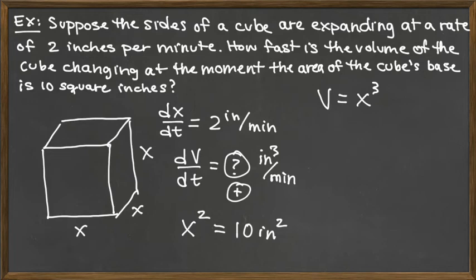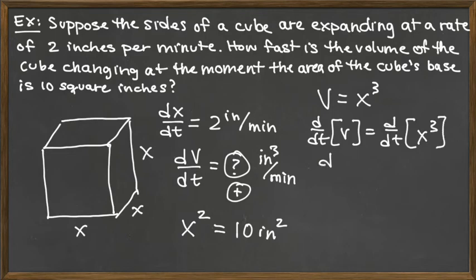We take the derivative with respect to t of both sides. So d/dt of v is equal to d/dt of x cubed. And so dv/dt would be what we have on the left-hand side, and the derivative with respect to time of x cubed, we'd have the power rule.